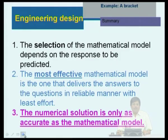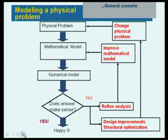The selection of a mathematical model depends upon the response to be predicted. The most effective mathematical model is the one that gives us an answer in a reliable manner with the least effort. In conclusion, the numerical solution is the only accurate tool to model the mathematical aspects of a physical problem. We can summarize this as a flow chart: we construct a physical problem, develop a mathematical model, use a numerical tool to solve it, and check whether the answer is acceptable. If not, we redefine the analysis, change our assumptions, and come up with an improved mathematical model.